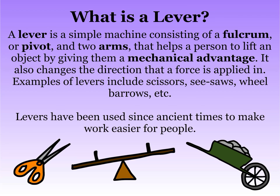First of all, what is a lever? A lever is a simple machine consisting of a fulcrum or pivot and two arms that helps a person lift an object by giving them a mechanical advantage. It also changes the direction that a force is applied in. Examples of levers include scissors, seesaws, wheelbarrows, etc. Levers have been used since ancient times to make work easier for people.